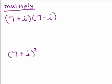Here are two problems for you to try. They are not the same. One is 7 plus i times 7 minus i - those are conjugates being multiplied together. And this is squaring a complex number, 7 plus i. Put the video on pause and try each of these problems.